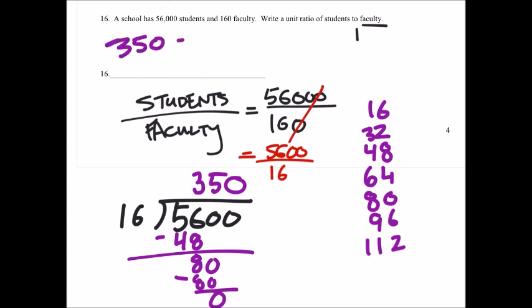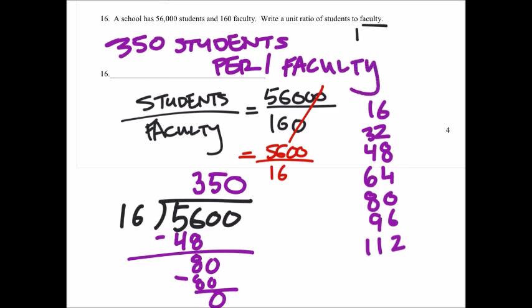350 students. That one was a lot better than the last one. Per one faculty. Is that legible?